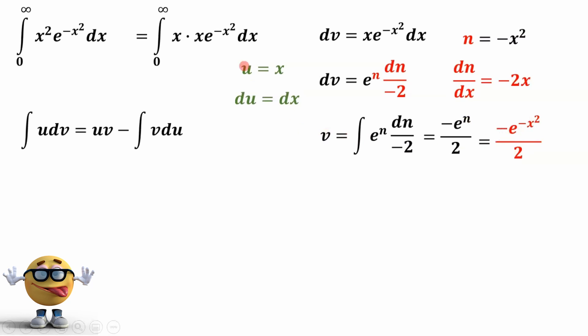And now we have everything we need to substitute our stuff in for integration by parts. So u is x, v is this. We just solved for v, so we'll substitute that in. The limits of integration are still from 0 to infinity, because everything's in terms of x. And then du is equal to dx. So everything's substituted in here.